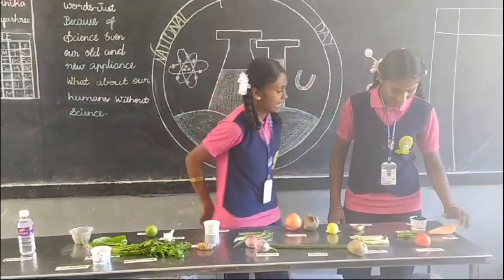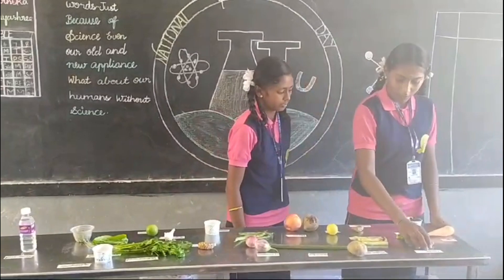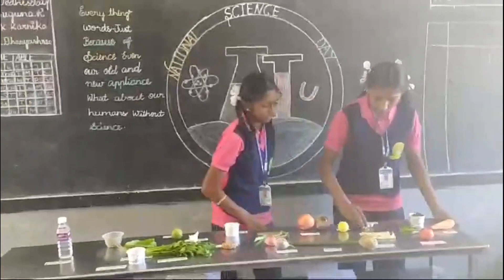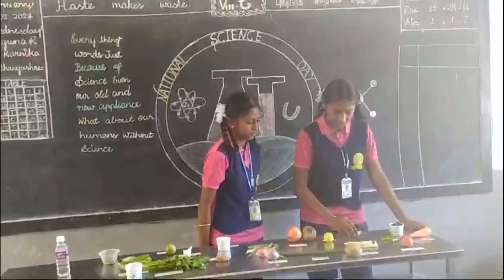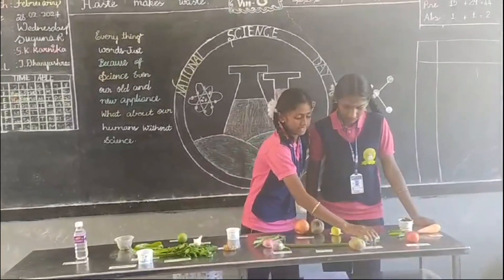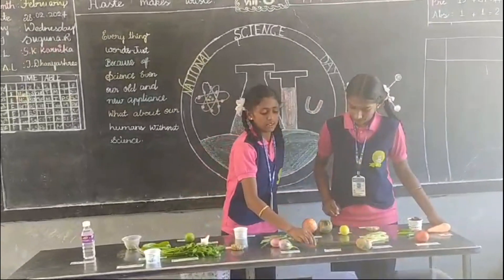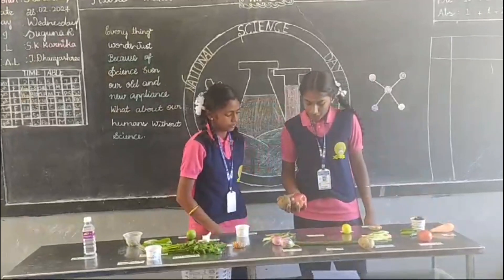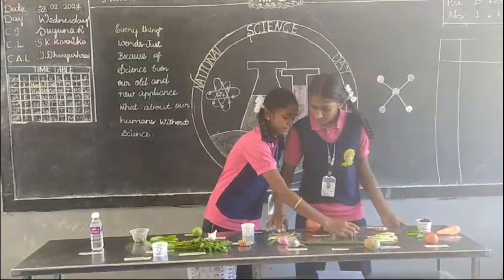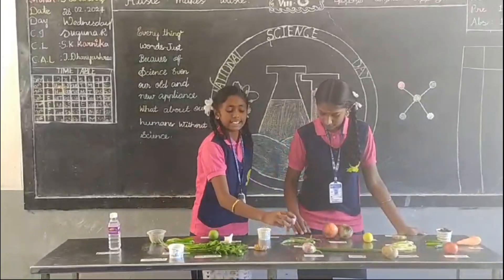Cal contains caffic acid. Tamarind contains tartaric acid. Tomato contains oxalic acid. Green chilli contains capsaicin. Ginger contains zingiberene. Beans contain hydrobenzoic acid. Potato contains caffic acid. Drumstick contains arsenic acid. Beetroot and apple contain malic acid. Lemon contains citric acid. Flat beans contain folic acid.